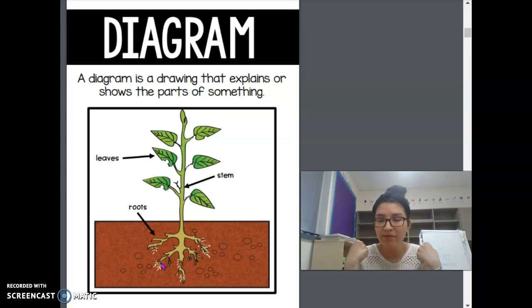It's the picture and the words. What is a diagram? It's the picture and the words, the words explaining the picture. So, right here, we have a plant. Here are the leaves. Here's a label. Leaves, roots, stem. So, a diagram is the picture and the labels explaining the picture.